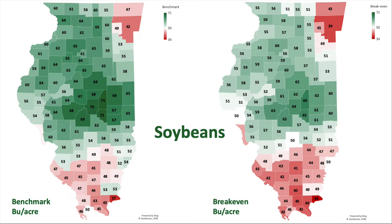On the left side you'll see our benchmark yield for ARC county — this is the five-year Olympic average from 2013 to 2017. To trigger payments in all cases, we have to have 2019 ARC county yields below those numbers. For McLean County we have 62 bushels per acre. You can see some lower yields — 41 bushels in Jefferson County in the southern part of the state, and 59 bushels per acre in DeKalb County in the northern part of the state.